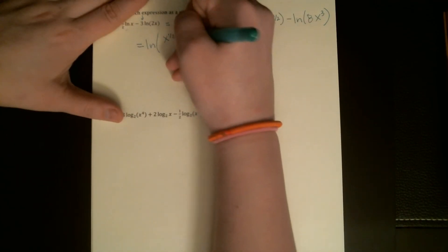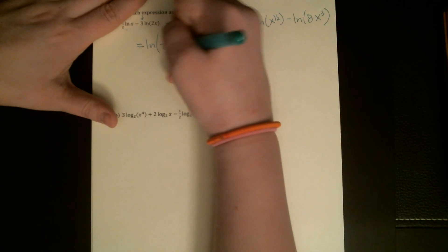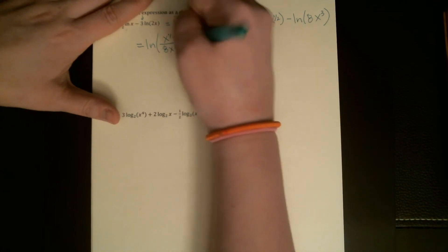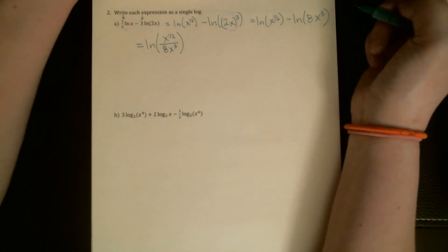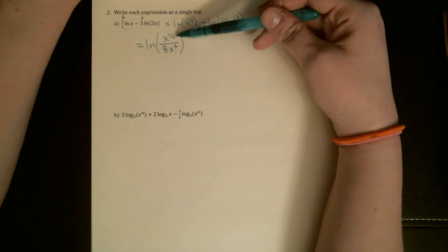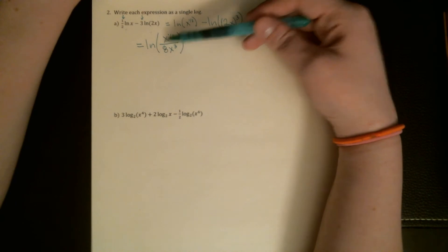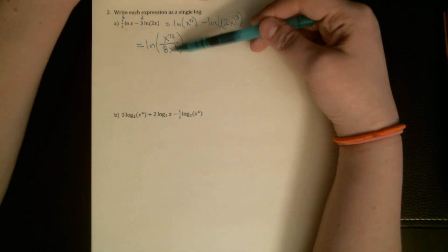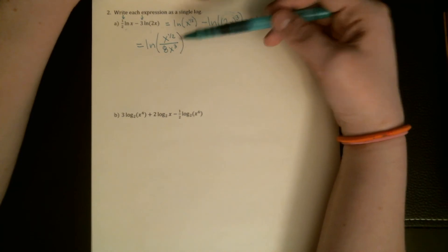So it's going to be the natural log of x to the one-half over 8x cubed, and I would just say a little bit of simplification should probably happen here. I'm not too worried about the one-half power being expressed as roots, but we do have x in the top and the bottom of this fraction. We should be able to combine that.